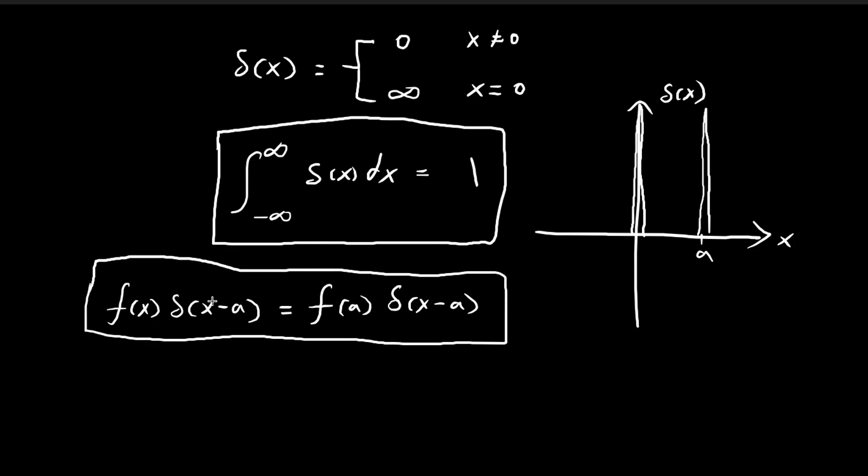Using this, we can prove a special identity. If we're integrating some function multiplied by the Dirac delta function, we can use this property to replace it. Since f of a is just a constant, I can pull it out, so I get f of a times this integral,